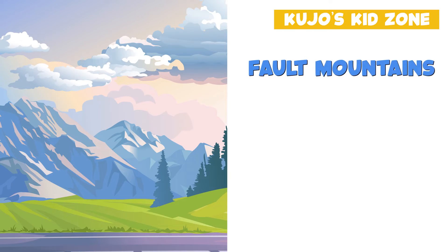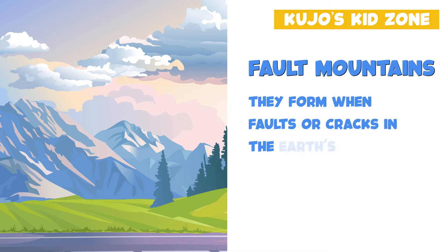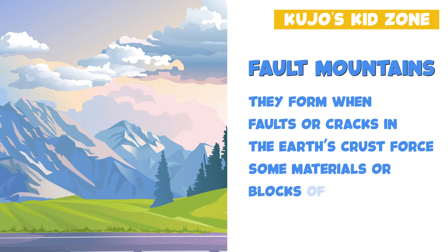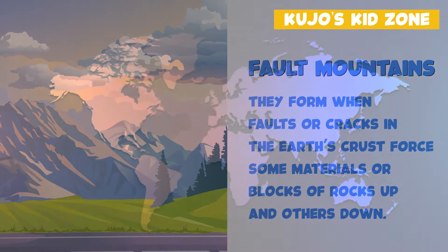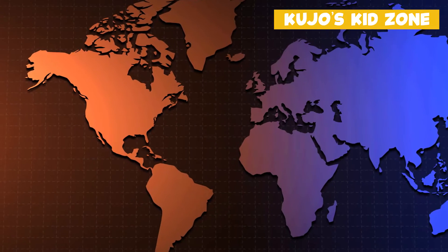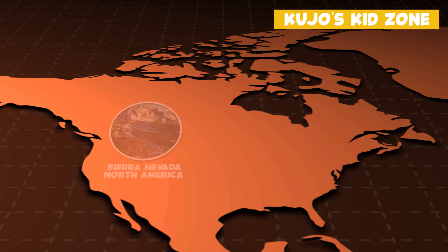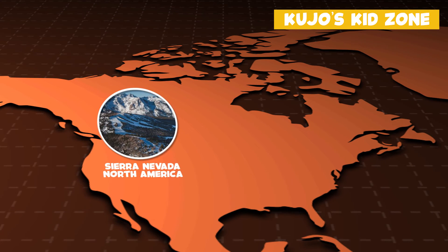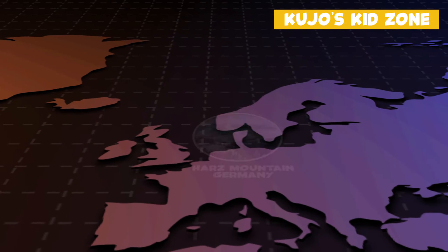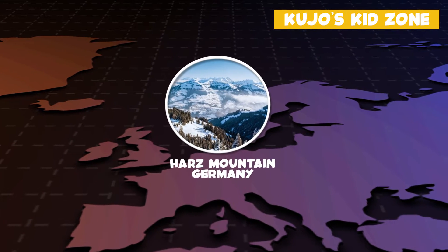Fault mountains form when faults or cracks in the Earth's crust force some materials or blocks of rock up and others down. An example of a fault mountain would include the Sierra Nevada mountains in North America and the Harz mountains in Germany.